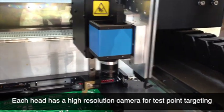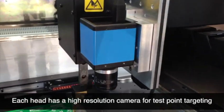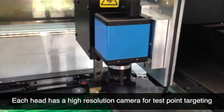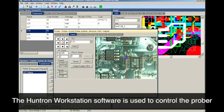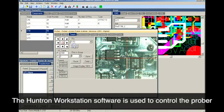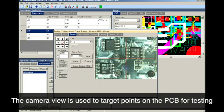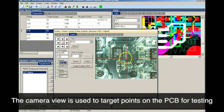Mounted on each Z-head is a high-resolution camera that is used to help you accurately target the points you want to test on the circuit board. Using the Huntron Workstation software, key points on the electronic components are targeted and used to calculate the pin positions on the device. This makes teaching the location of the components to be tested quick and efficient.